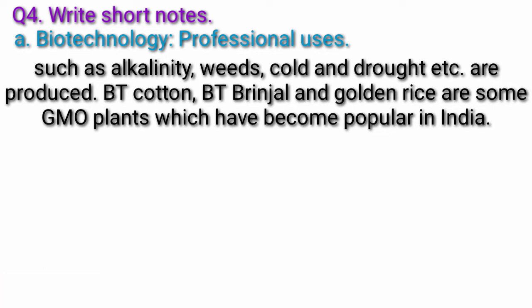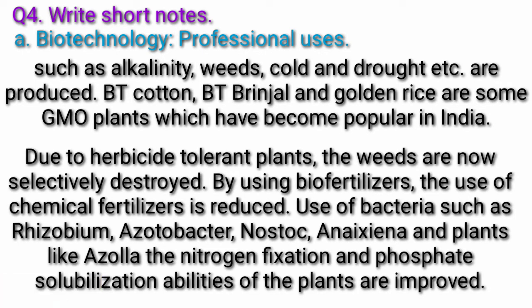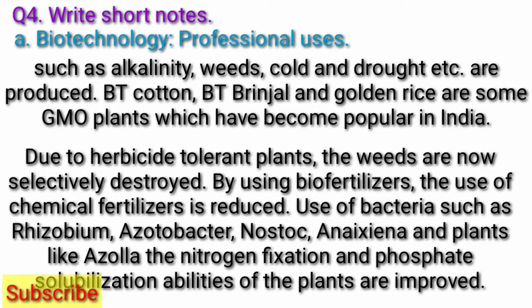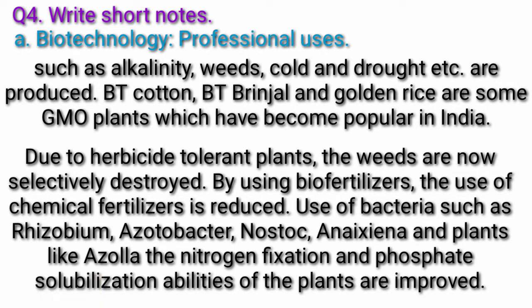Bt cotton, Bt brinjal and golden rice are some GMO plants which have become popular in India. Due to herbicide-tolerant plants, the weeds are now selectively destroyed. By using biofertilizers, the use of chemical fertilizers is reduced. Use of bacteria such as Rhizobium, Azotobacter, Nostoc, Anabaena and plants like Azolla improve the nitrogen fixation and phosphate solubilization abilities of the plants.